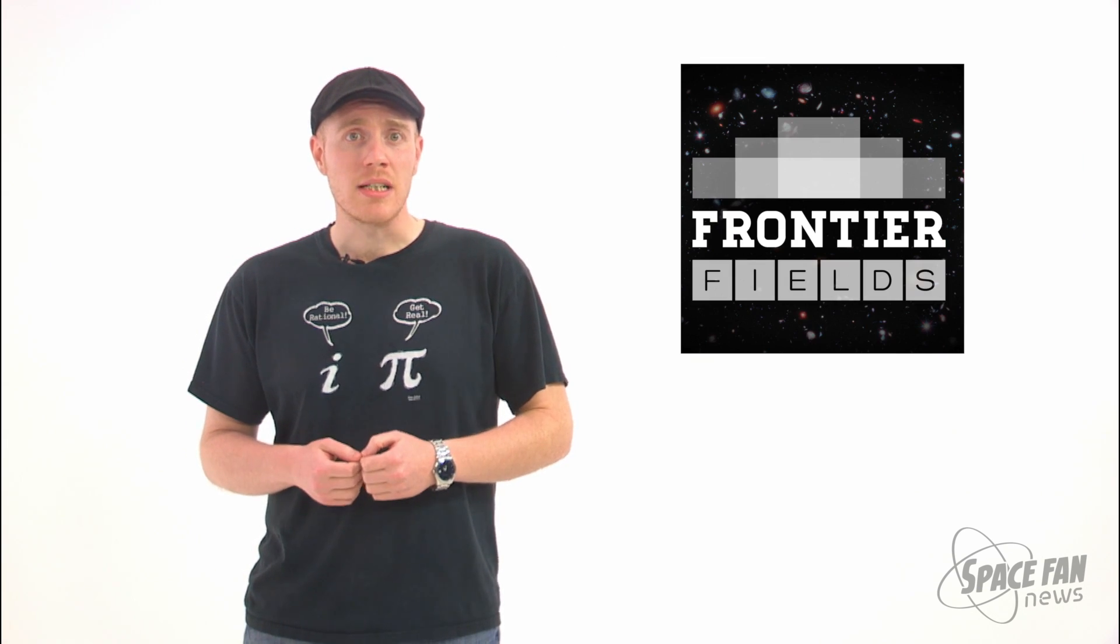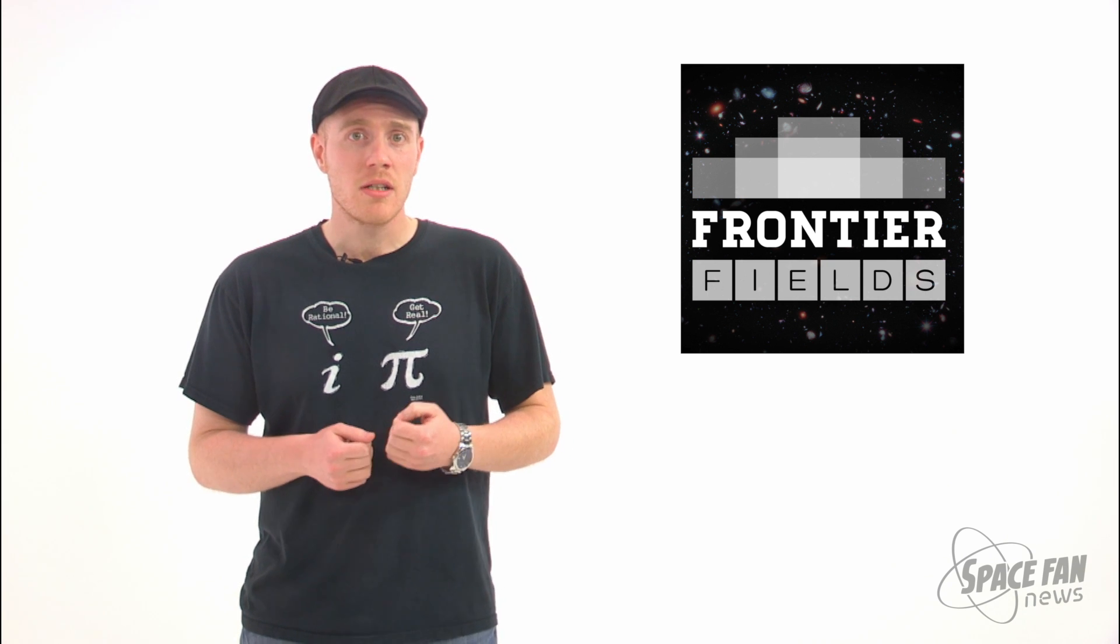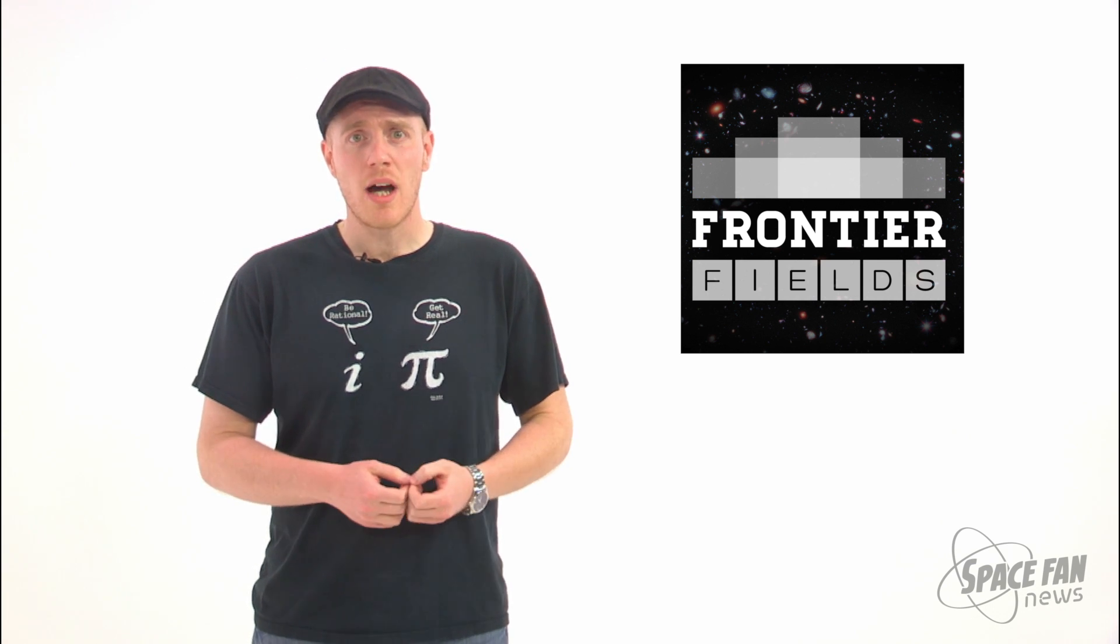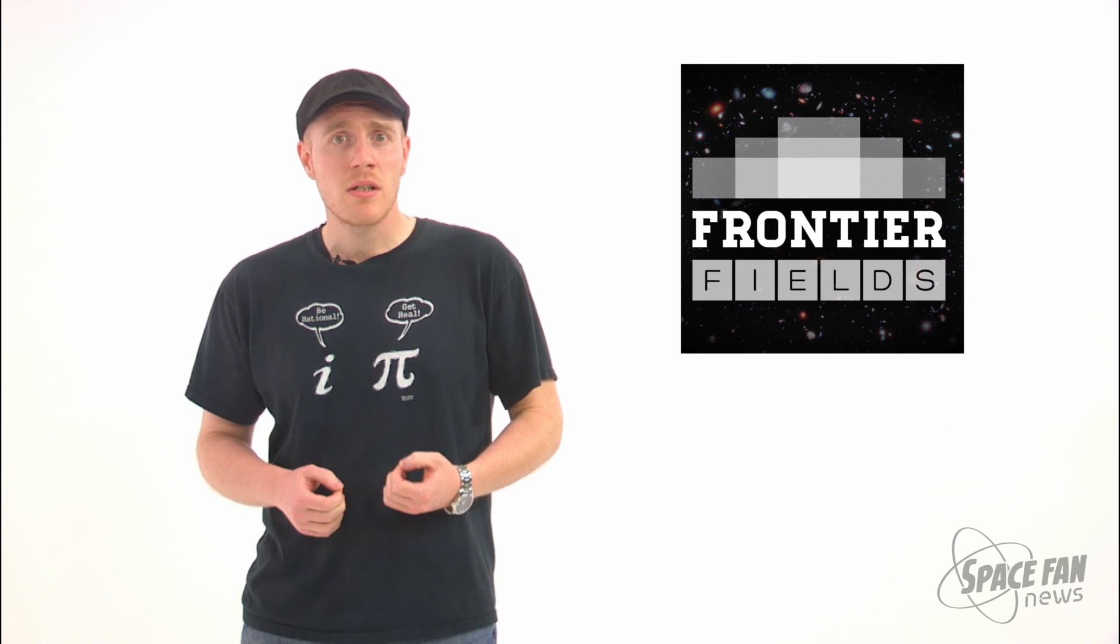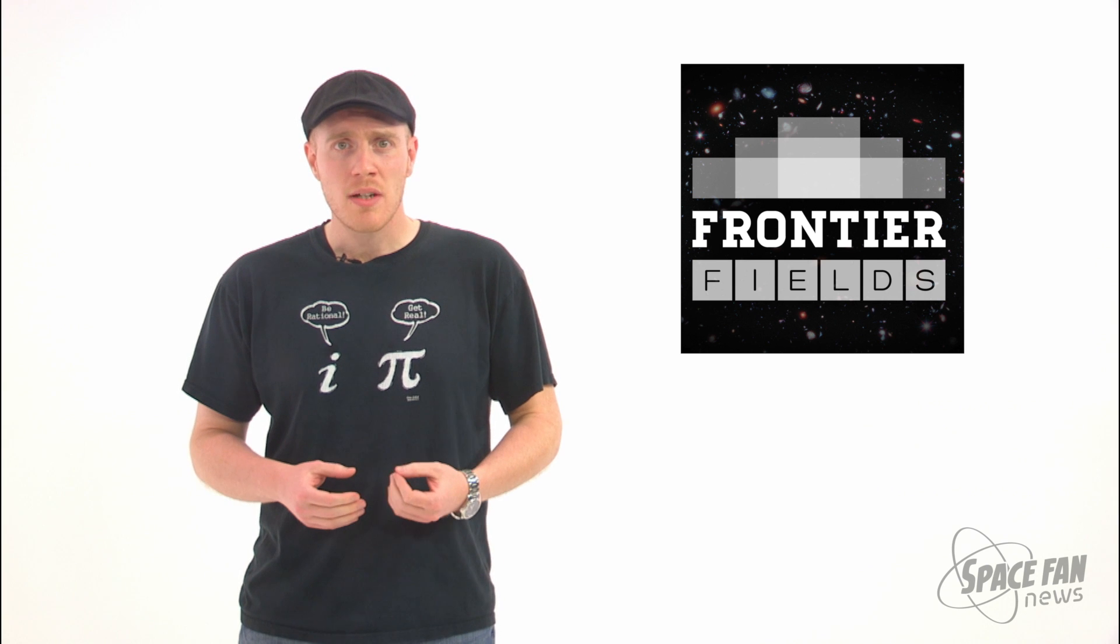Since gravitational lensing is achromatic, that is, it doesn't affect the color of the light that passes through it, astronomers will still be able to use color to determine the age, chemical composition, and even redshifts of the objects observed. Not only will we be discovering objects further back in time than we've ever seen, but the very use of gravitational lenses will give even further insight in how they work, along with the dark matter that makes them up.